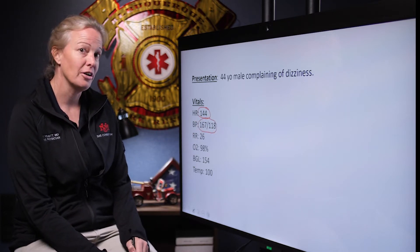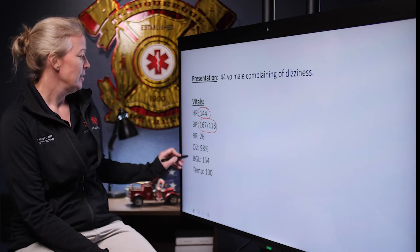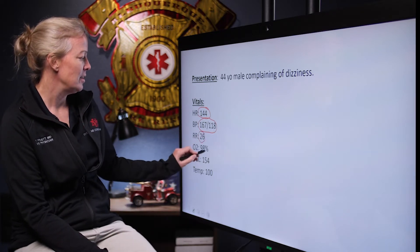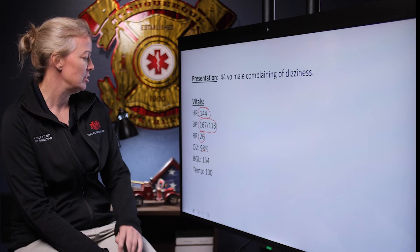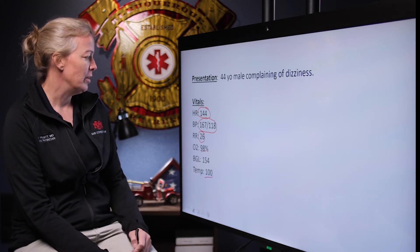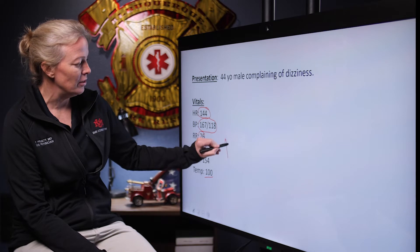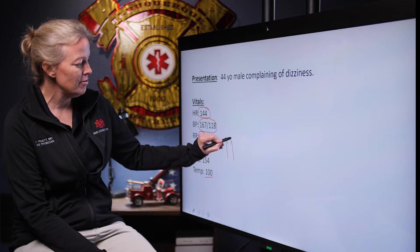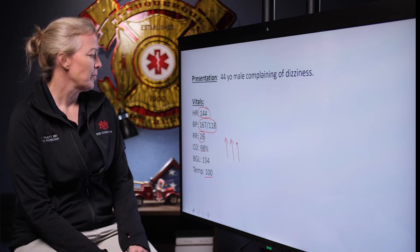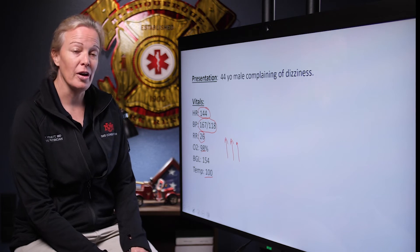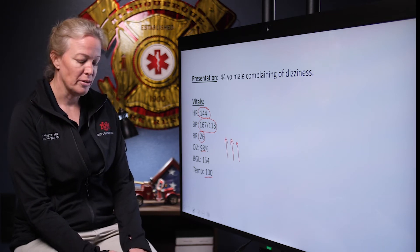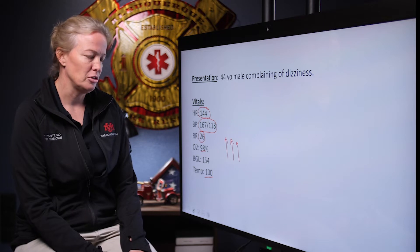So he is tachycardic and hypertensive. His respiratory rate is 26, oxygen saturation 98, sugar of 154, and a temp of 100. Everything is indicating that something's going on — blood pressure's high, heart rate's high, respiratory rate is high, and he even has a slight temperature.